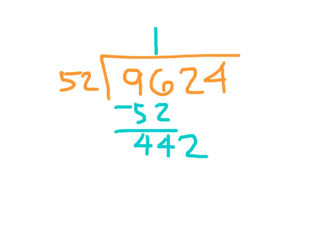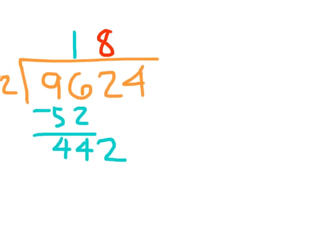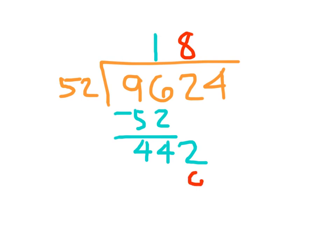442 divided by 52. We think of 52 as being close to 50. 50 going into 442 would be 8 times. Let's try 8. 8 times 2 is 16, regroup the 1. 8 times 5 is 40, plus 1 is 41. If I subtract those two, I get 26. That's fine, because this was 52. Otherwise, I'd have to go back and adjust my quotient.